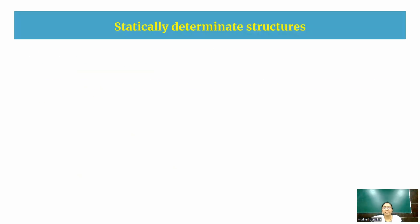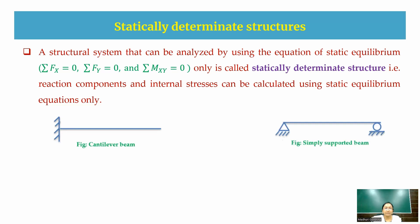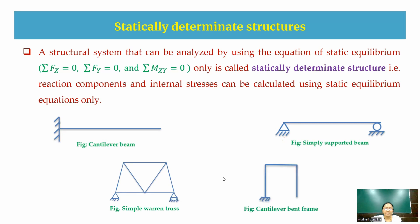A statically determinate structure is any structural system that can be analyzed using only the equations of static equilibrium. That means reaction components and internal stress components can be calculated using only static equilibrium conditions. Examples include cantilever beams, simply supported beams, a simple Warren truss, and a cantilever bent frame — all reactions and unknowns can be solved using static equilibrium conditions.